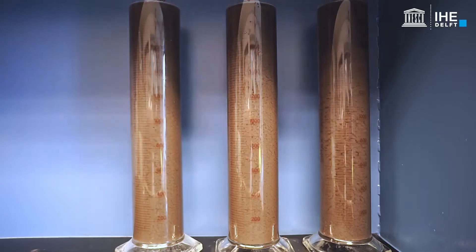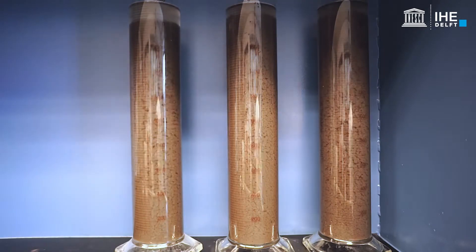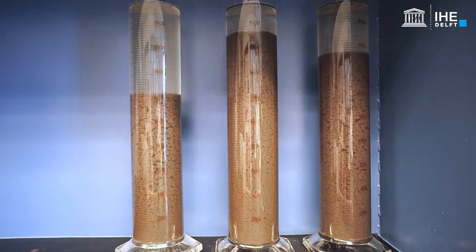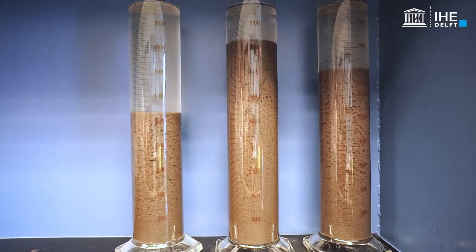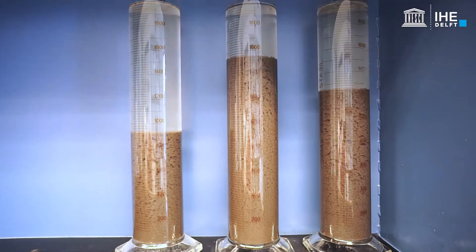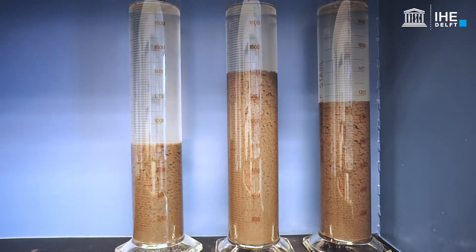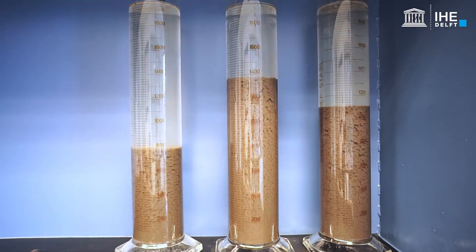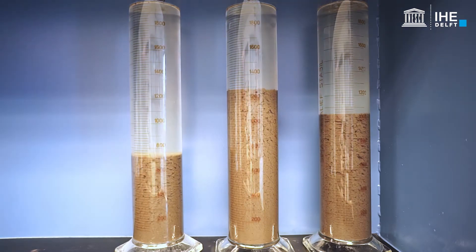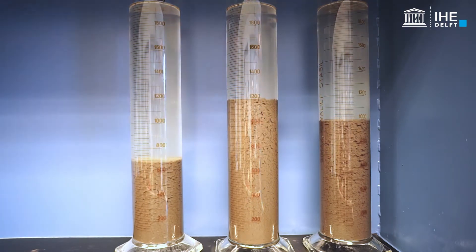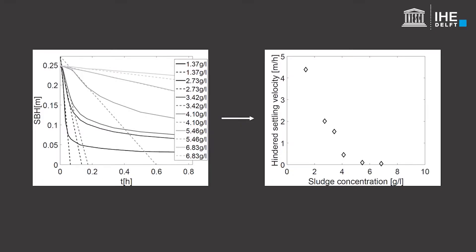Different concentrations will settle with a different velocity, resulting in a series of batch curves. Less concentrated samples show a faster settling behaviour. By calculating the slope for each dilution, the settling velocity as a function of the sludge concentration is measured.